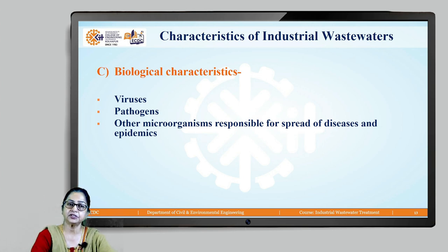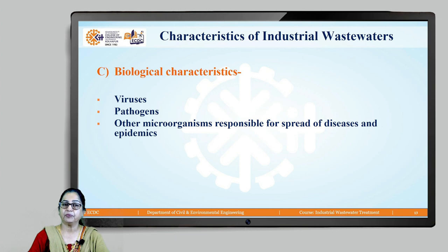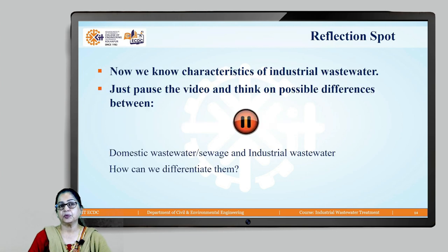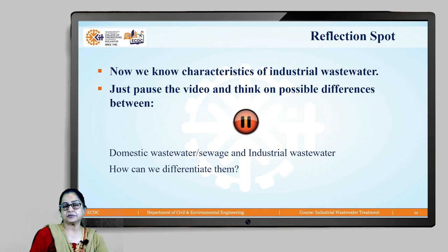Biological characteristics: industrial wastewaters are likely to contain many viruses, bacteria, and pathogens — that is, disease-causing organisms. Now that we know the characteristics of industrial wastewater, let's compare it with domestic wastewater, known as sewage, and try to differentiate between the two.